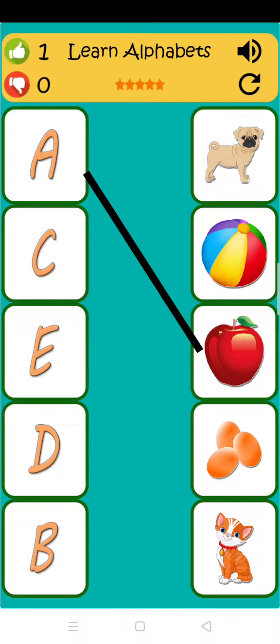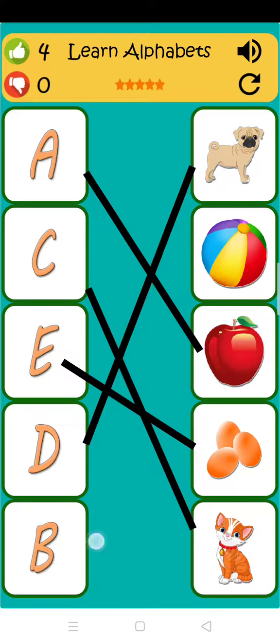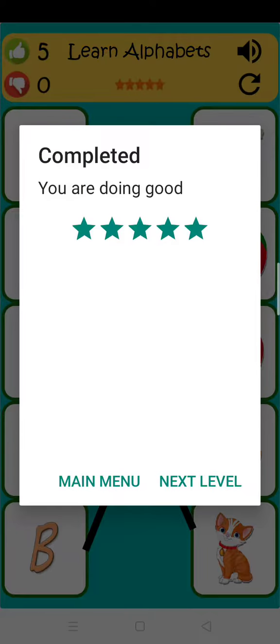A is for apple. C is for cat. E is for egg. D is for dog. B is for ball.